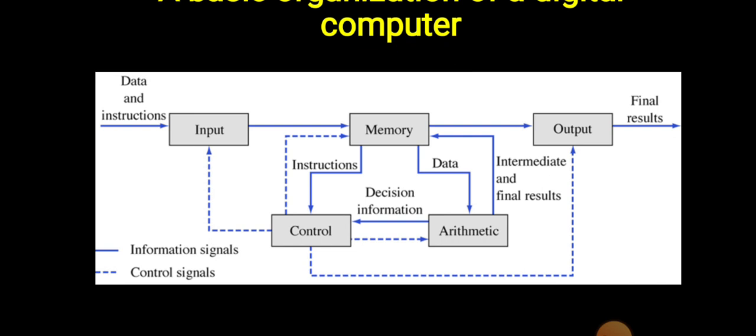Information signals and control signals. Information signals is a dot line. Control signals is a dot line.